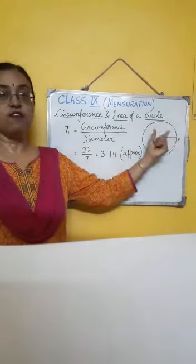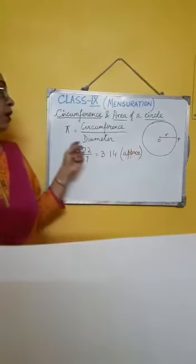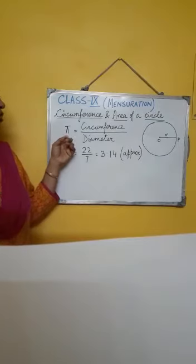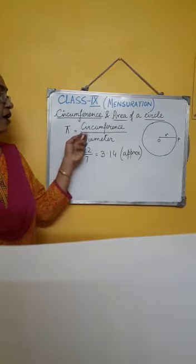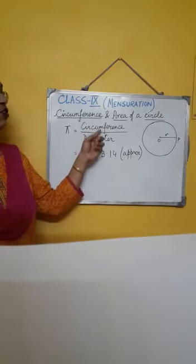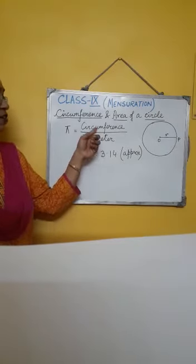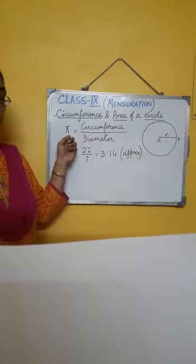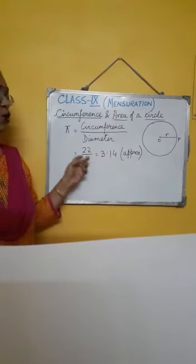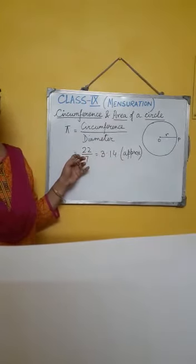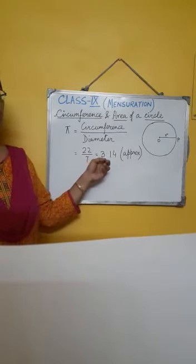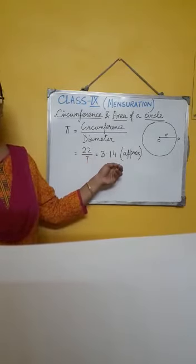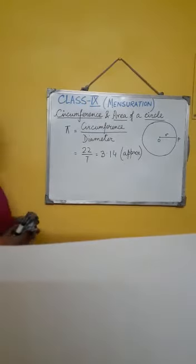Now there is a new word, that is pi. What is pi? Pi is the ratio of the circumference to the diameter. So circumference divided by diameter is called pi. The approximate value of pi is twenty-two by seven, that is 3.14.